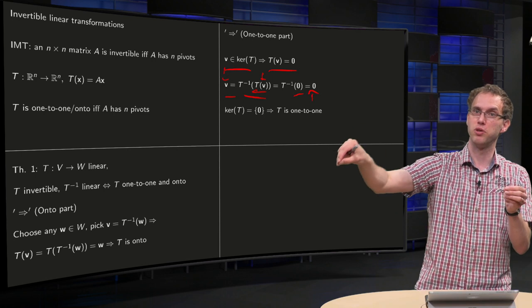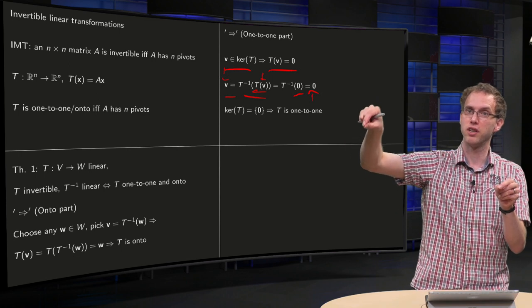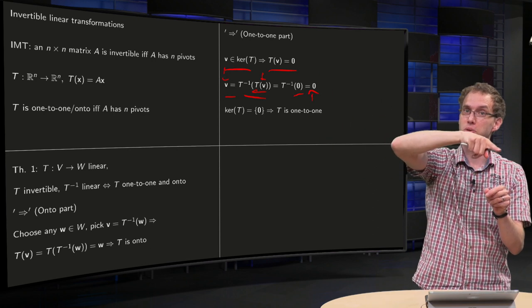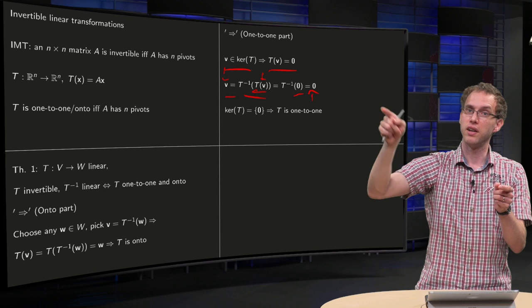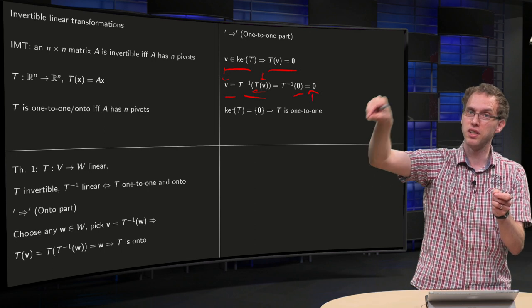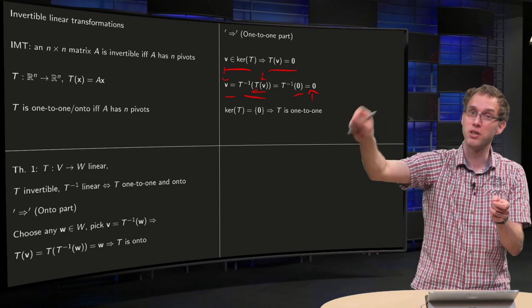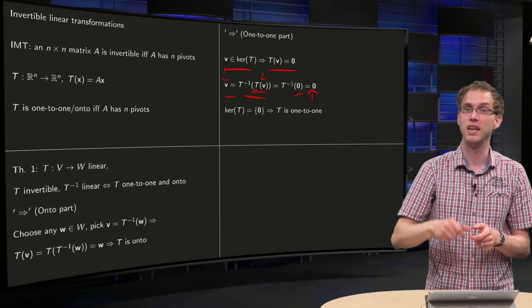You use the inverse, you go back to your domain, and the only possibility is that you came from zero, because the T inverse of zero, because your T inverse is also linear by assumption, so your T inverse of zero equals zero. You cannot start at a different point, v go to zero, because if you come back, you have to go to zero.